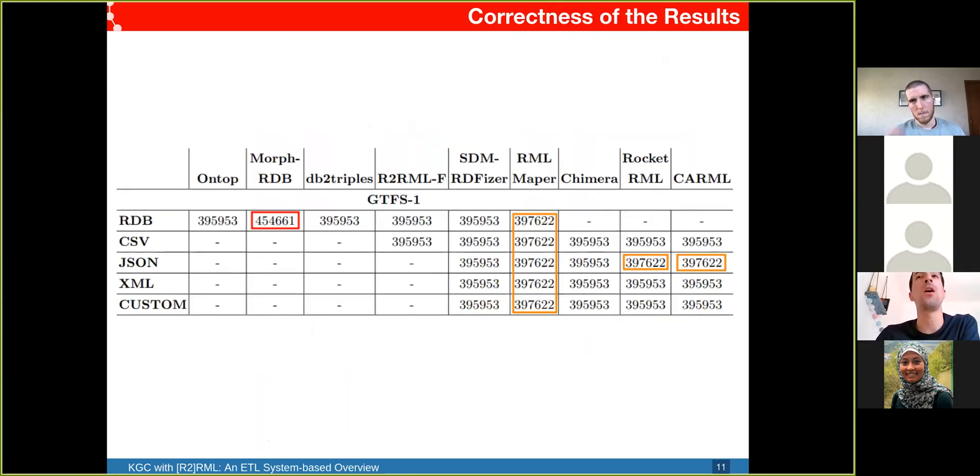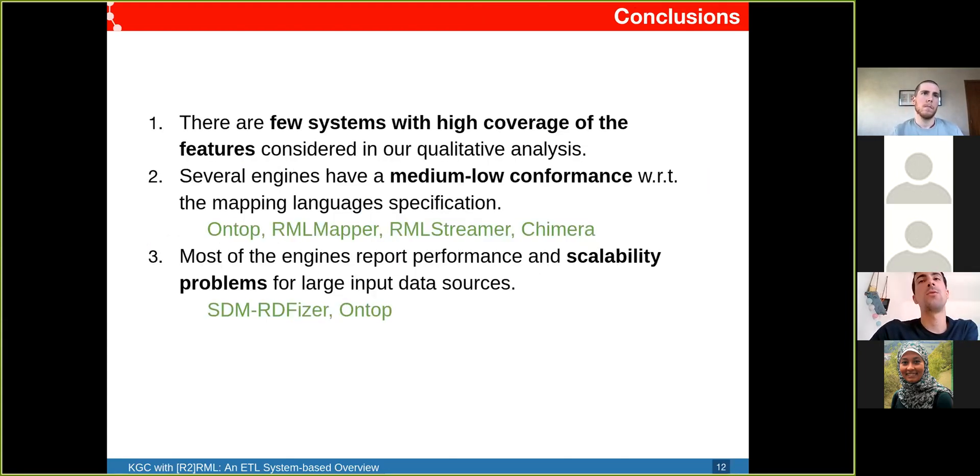Finally, we have the correctness of the results. To measure this we counted the number of triples generated by every engine. It doesn't fully cover correctness but gives us an idea. Morph-RDB generates many more triples than it should because the algorithm it uses and the duplicate elimination mechanism is not correct. RML Mapper, RocketRML, and Carmel in the JSON case generate a few more triples than they should because they generate triples when they find empty data values or null values in relational databases, which is not conformant to the mapping languages.